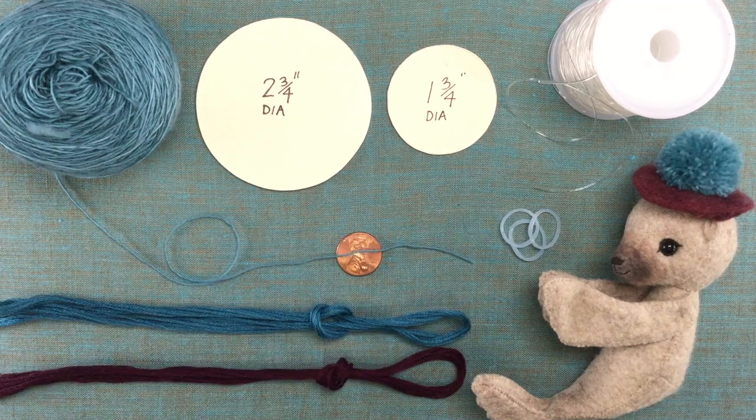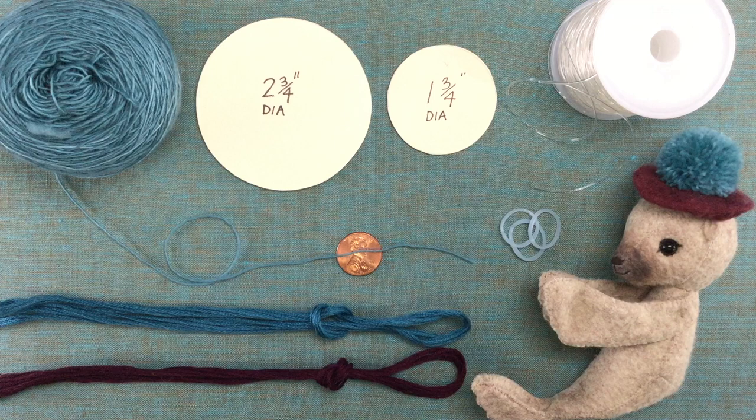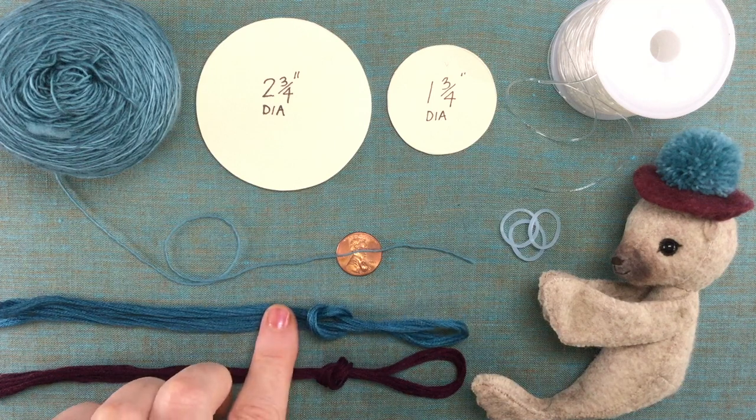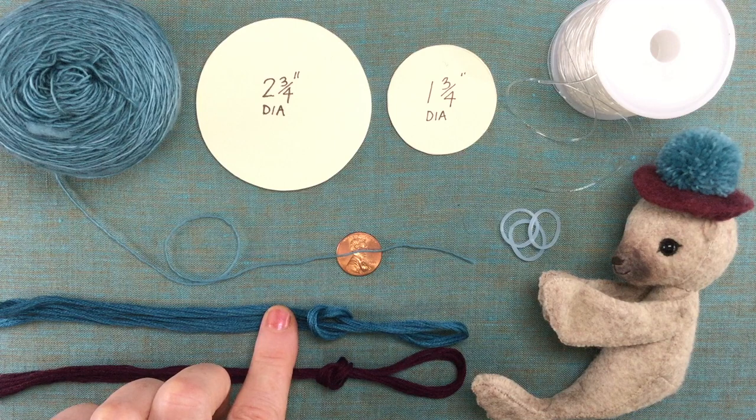For your embroidery thread you'll need two colors. One color to match your pom-pom. This is DMC number 3809, turquoise very dark.